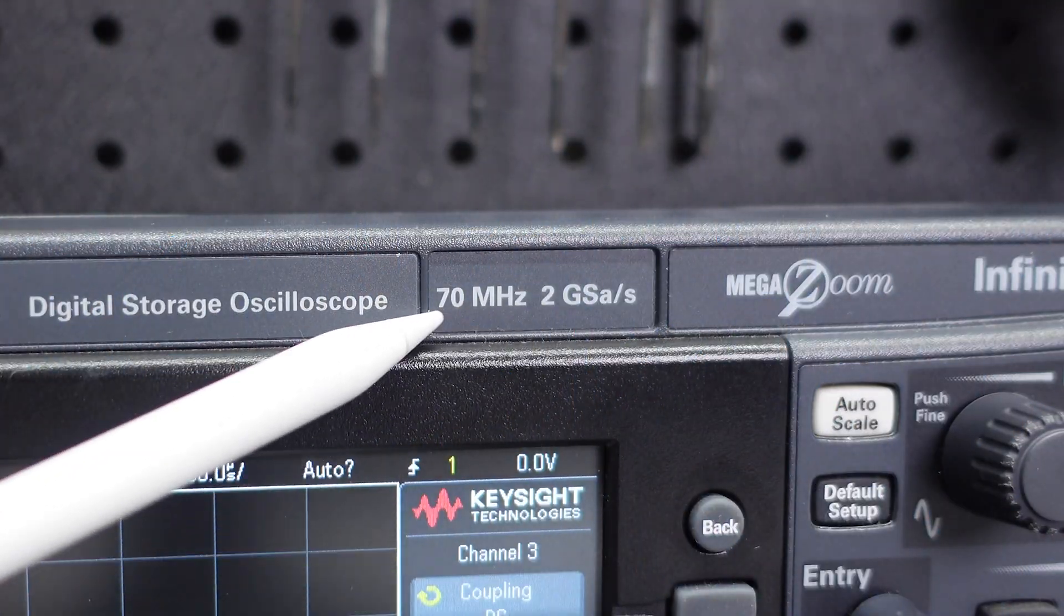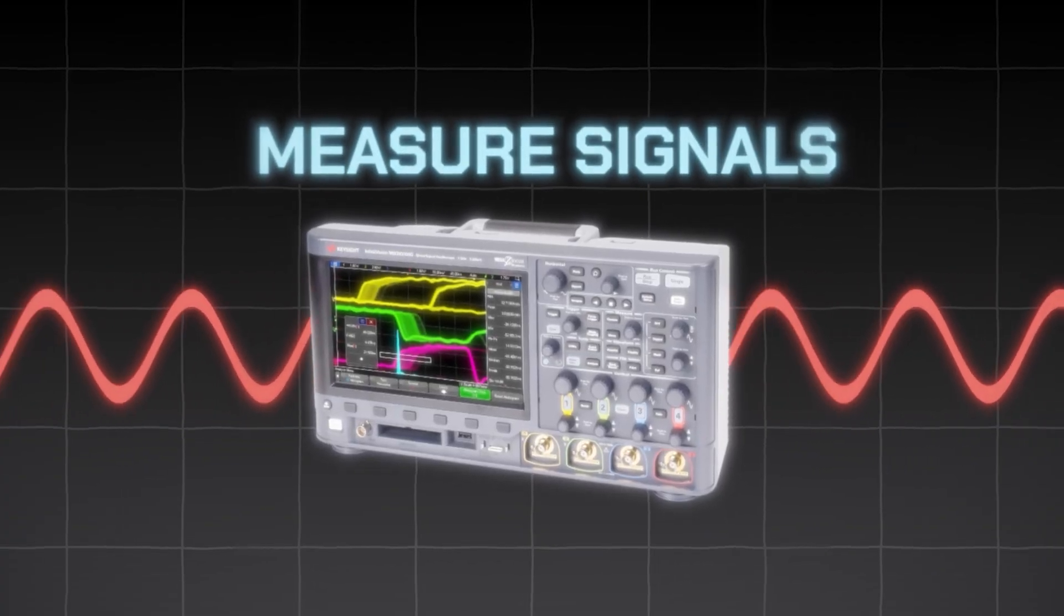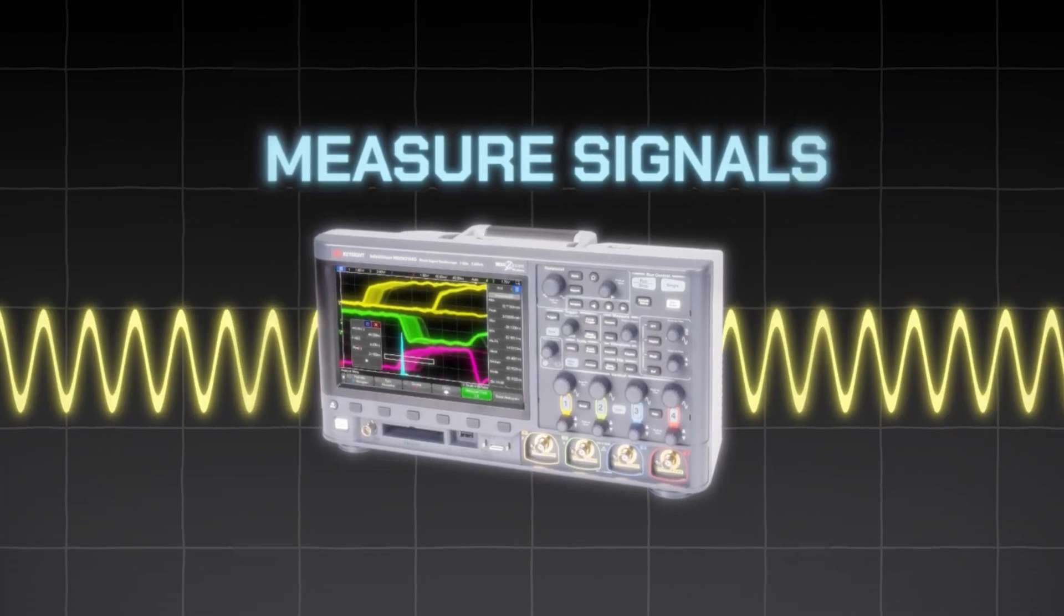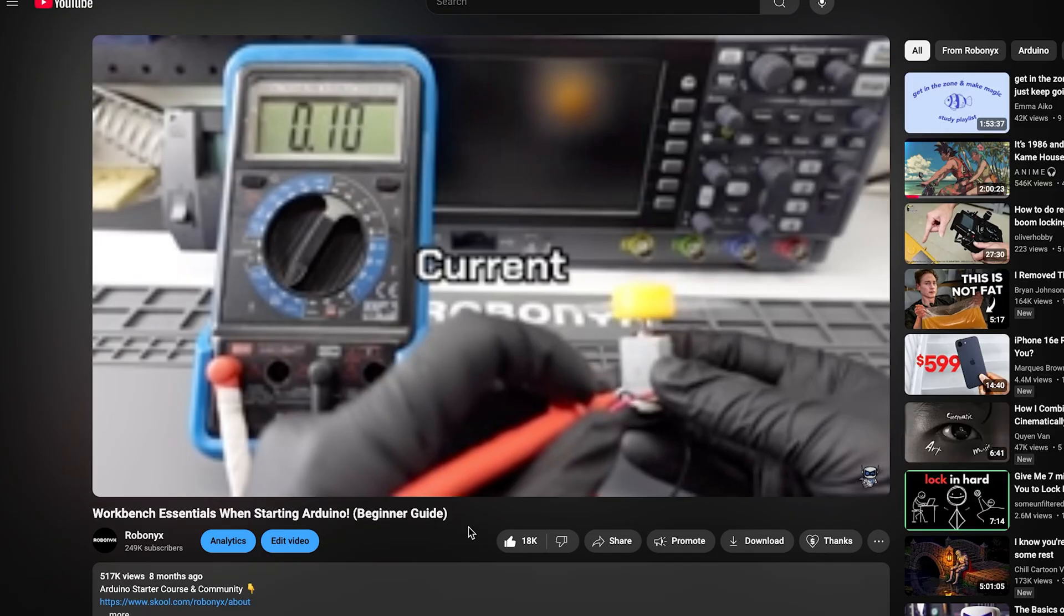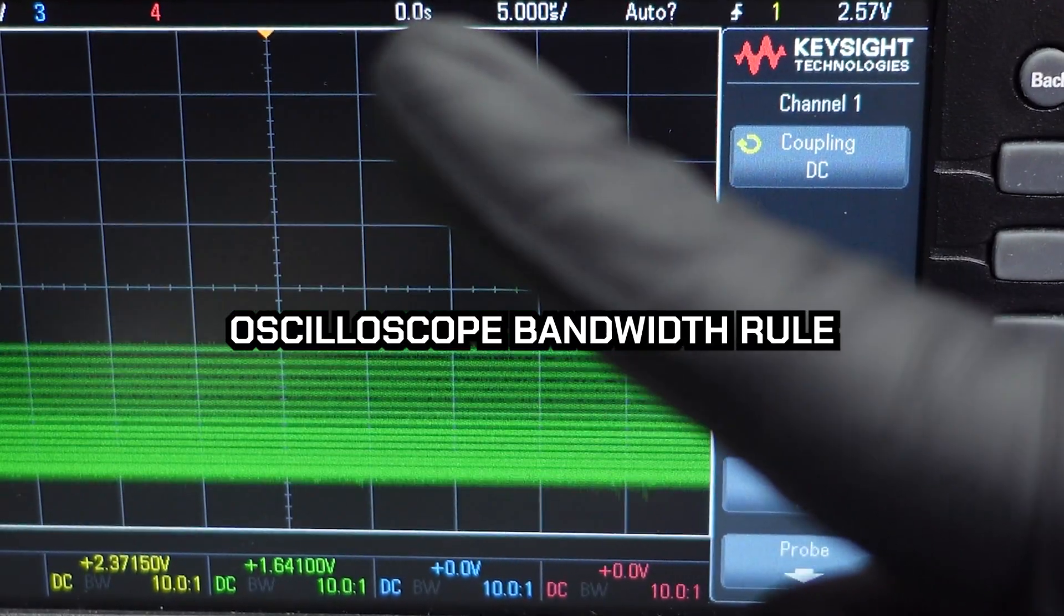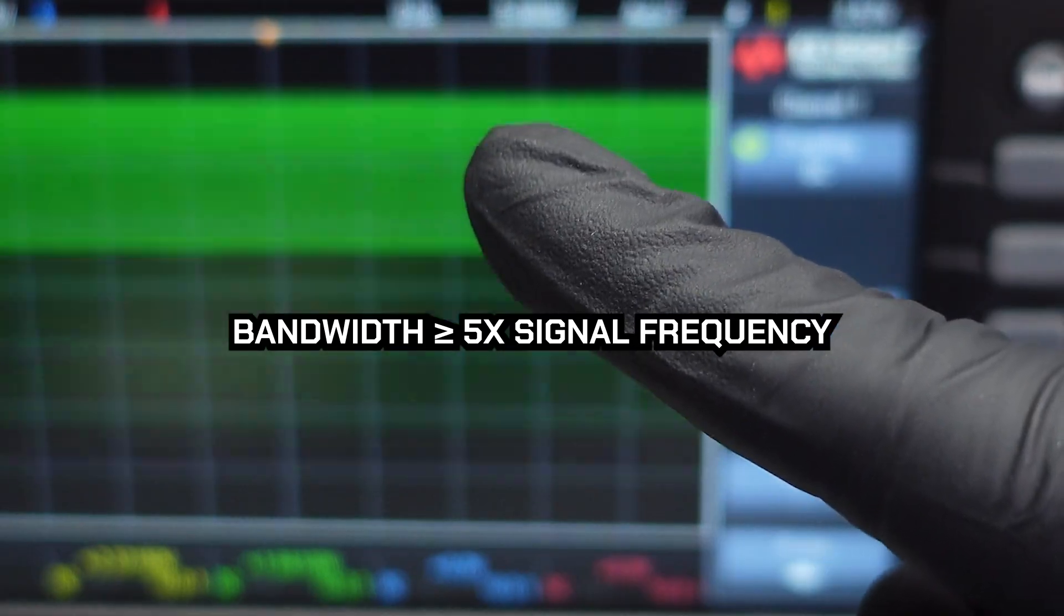In a scope, the most important stat is the bandwidth. It determines how fast you can measure signals, and think of it like your internet speed. If you have a low bandwidth oscilloscope, you're going to miss a lot of details in fast signals, just like a slow internet speed makes all your videos pixelated and laggy. A general rule is your oscilloscope bandwidth should be at least 5 times higher than the highest frequency that you want to measure.